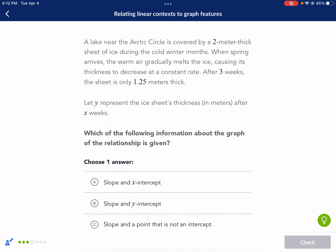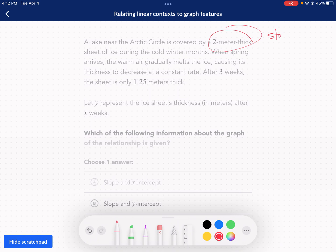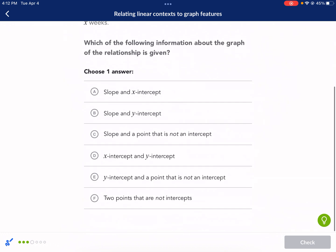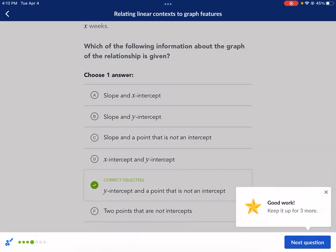So this is going to be like the other one. Which of the following information about the graph is given? Okay. So it's covered by a 2-meter-thick sheet of ice. This is our starting point. Anytime you have a starting point or starting value, this is going to be your Y-intercept. So we have our Y-intercept. And then it tells us three weeks later, that's our X weeks. And it is 1.25 meters thick. And that's the Y. So we're given another point. We're given the Y-intercept plus another point that's not an intercept. So let's go ahead and see what that is. It doesn't tell us how fast the ice melts, but it does tell us the starting point. So a Y-intercept and a point that is not an intercept, that's option E. All right. Here we go. We got three more.